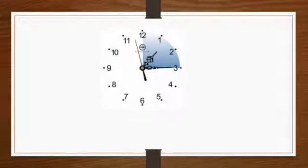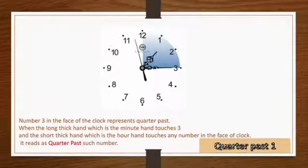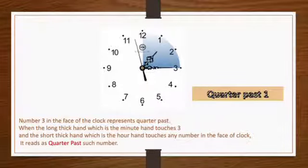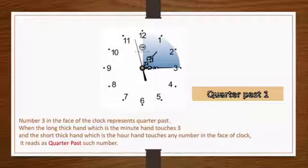Take a look at the picture. Number 3 on the face of the clock represents quarter past. When the long, thick hand — which is the minute hand — touches three, and the short, thick hand — which is the hour hand — touches any number on the face of the clock, it's written as quarter past such number. So here we have quarter past one. Don't forget, the minute hand is touching number three.